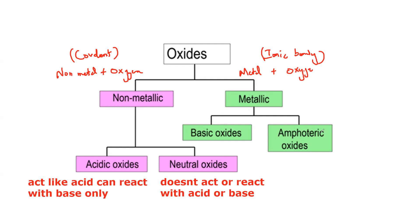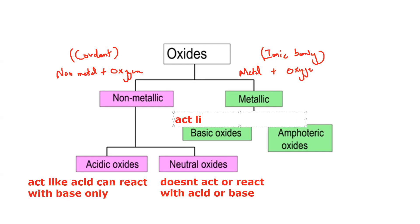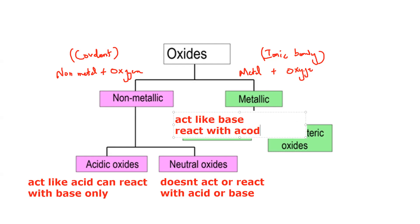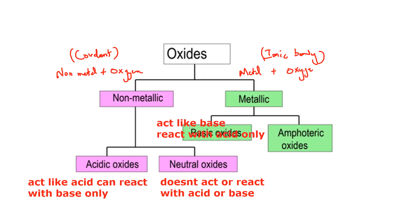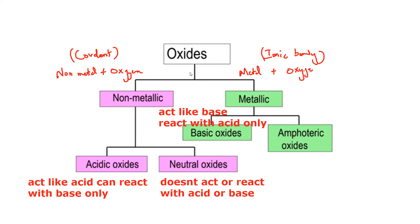A basic oxide acts like a base and can react with acid only — if we add base it does not react. An amphoteric oxide can act like both an acid and a base, meaning it can react with both acid and base.